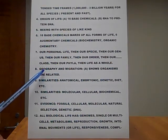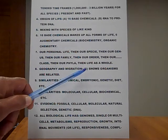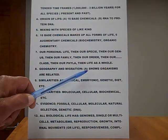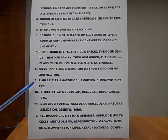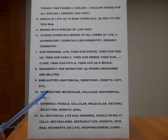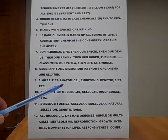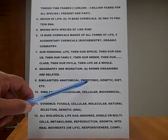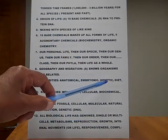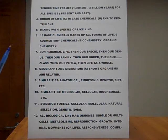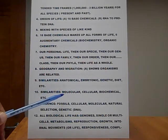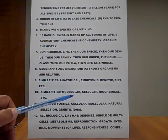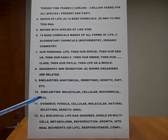Number eight: geography and migration. This includes A: shows that all organisms are, in fact, related. Number nine: similarities, meaning anatomical similarities, embryonic, genetic, diet, etc. Number ten: similarities — in this case, molecular, cellular, biochemical, etc.